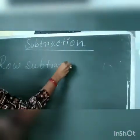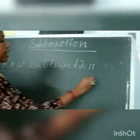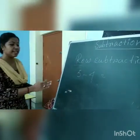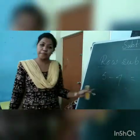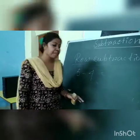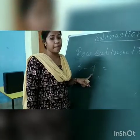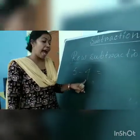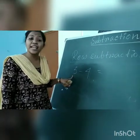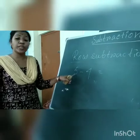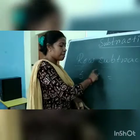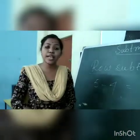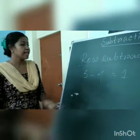Just like addition, there is also row subtraction. For example, 5 minus 4. This arrangement of numbers is called row subtraction. To solve this, we look at the smaller number. We start counting after the smaller number, up to the greater number written in the problem. Here the smaller number is 4, so after 4 comes 5 — that is 1 house. So 1 will be the answer.